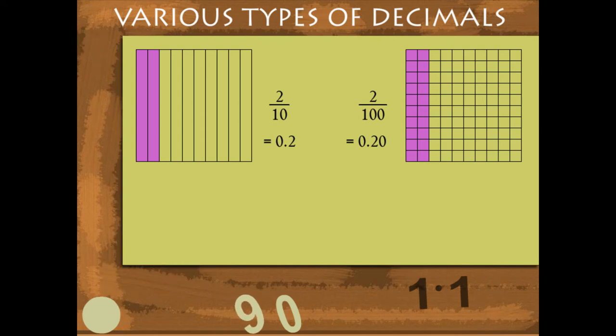However, both are equal. 2 upon 10 is equal to 20 upon 100 is equal to 200 upon 1000.